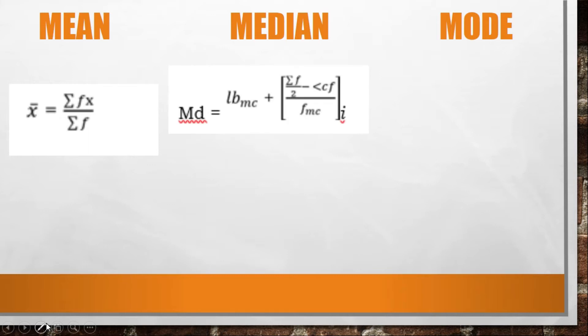For median, the formula equals the lower boundary of the median class plus the summation of frequency divided by 2 minus the less than cumulative frequency, all over the frequency of the median class times its class interval. While in mode, the lower boundary of the modal class plus f1 minus f2 over 2 times f1 minus f2 minus f3.